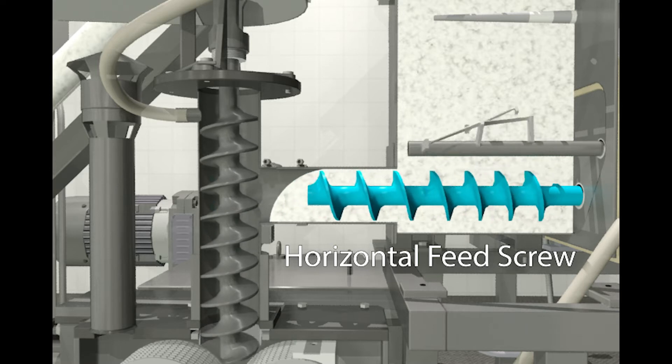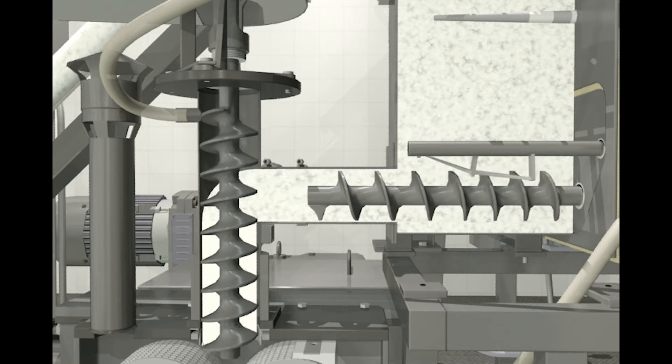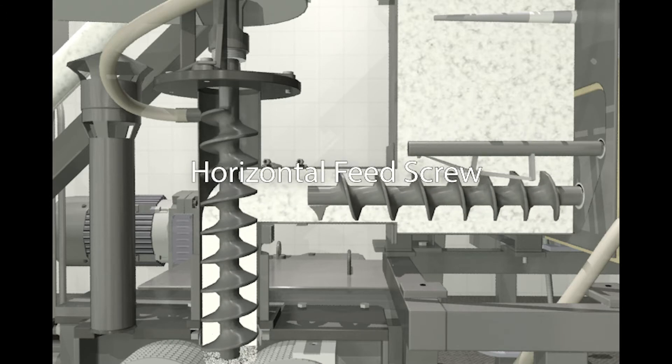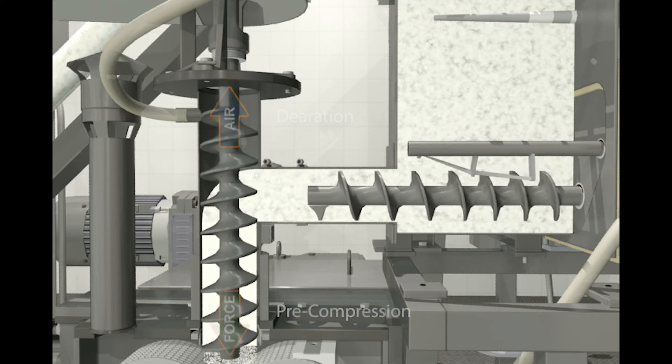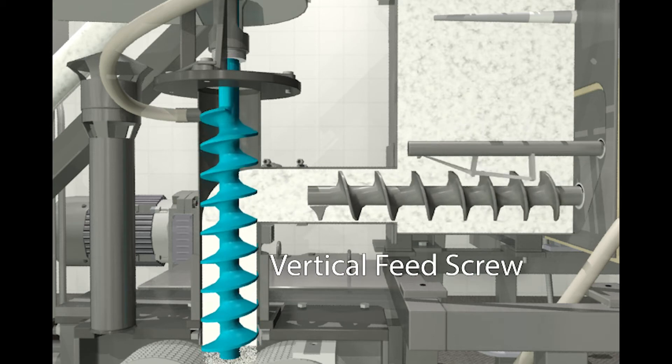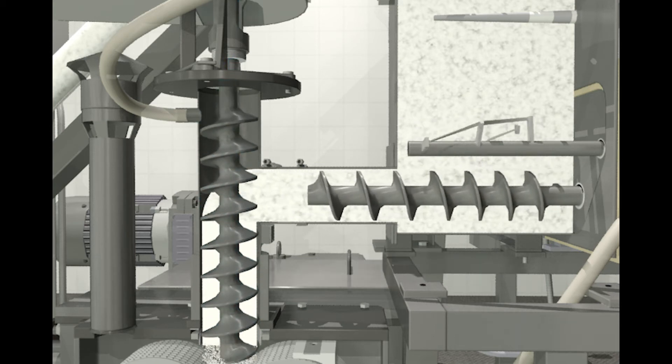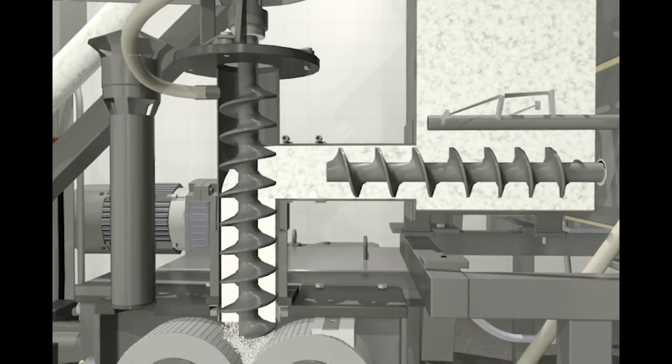Pre-compression and de-aeration of the material is then carried out by means of a vertical feed screw which normally operates at a speed significantly higher than the metering screw. The vertical screw forces the material to the rolls where the actual compaction takes place.